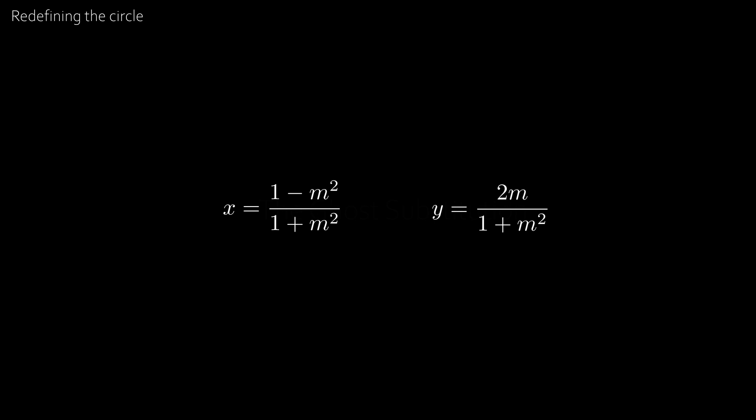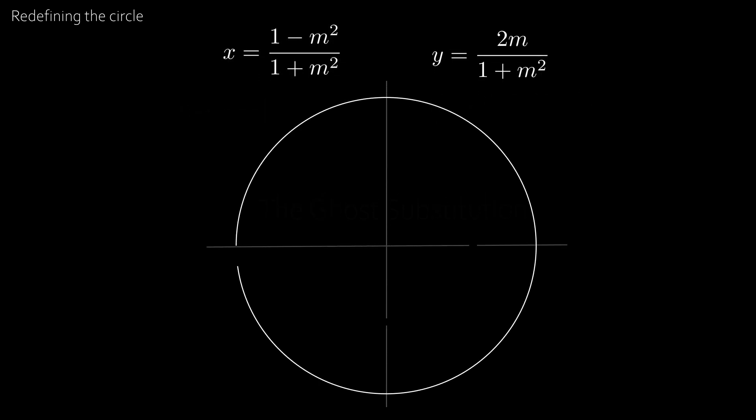And this is called the rational parameterization of the unit circle. So to double check that this actually plots the unit circle, let's plot this equation on a graph. And we see that we actually get the unit circle,